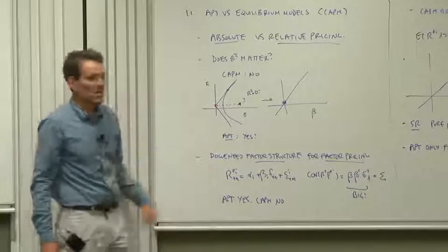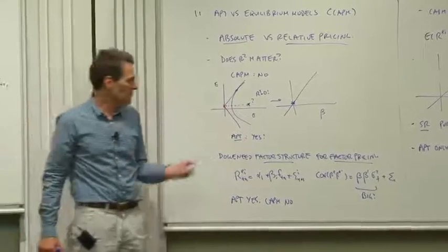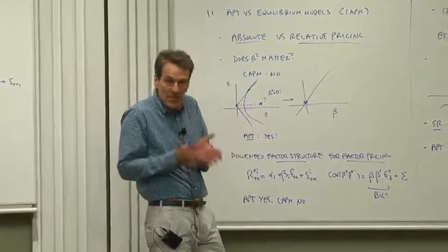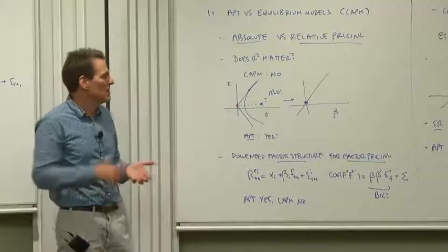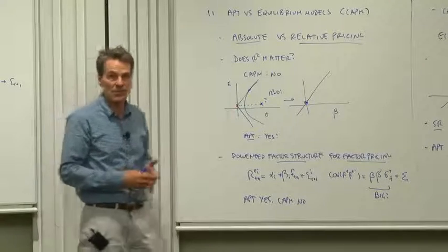For the APT, of course, R squared is essential. The point of the APT is you only expect small alphas where there are small epsilons, where the factors do a good job of explaining the variance of security returns.